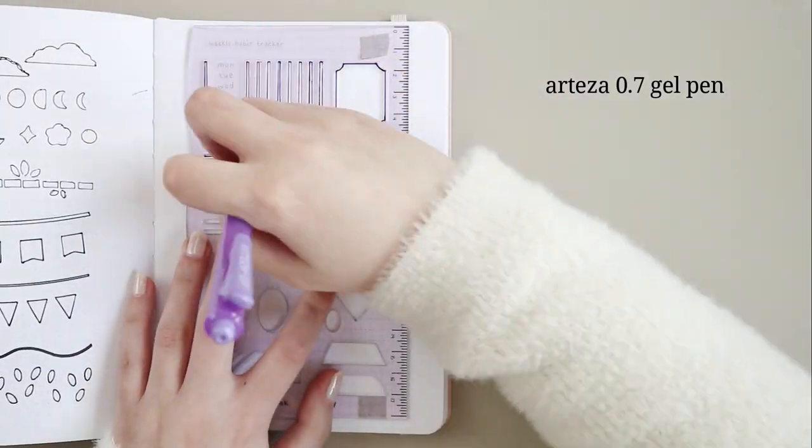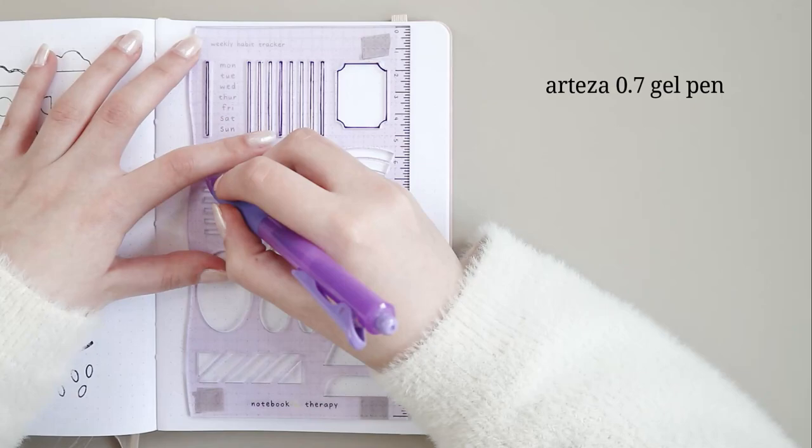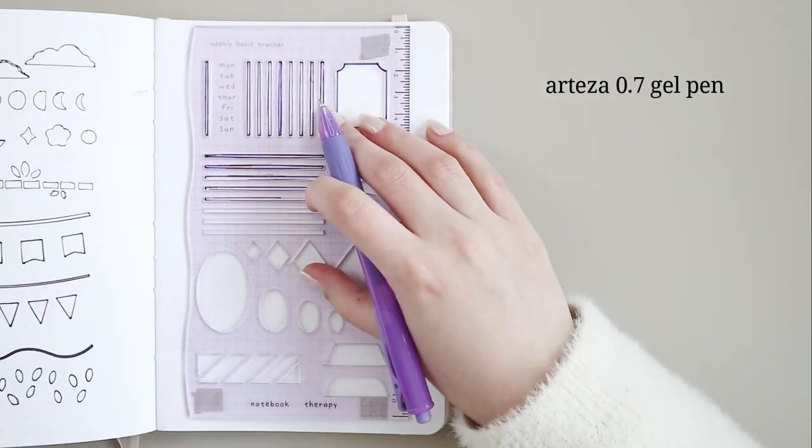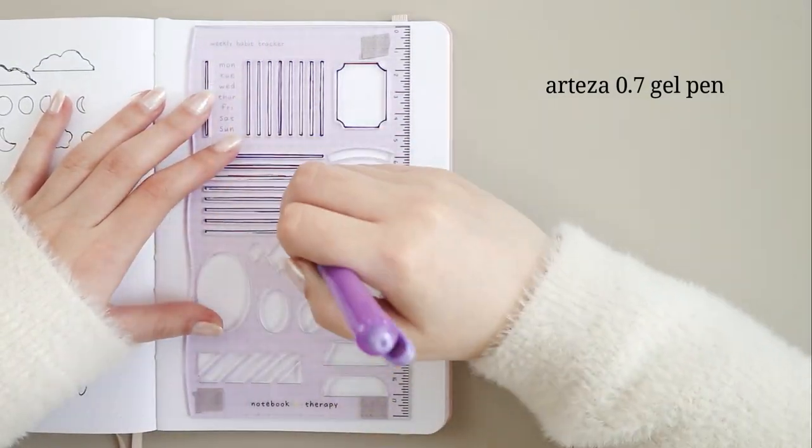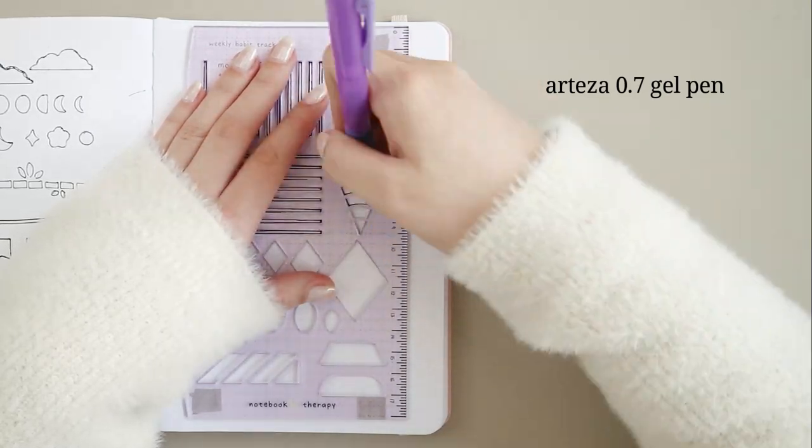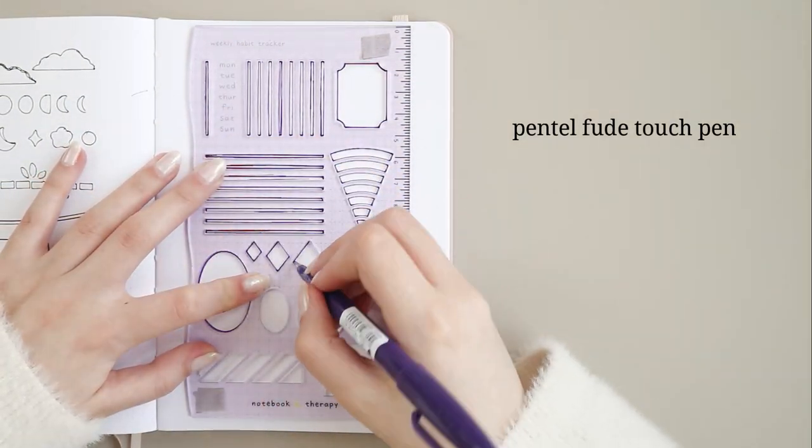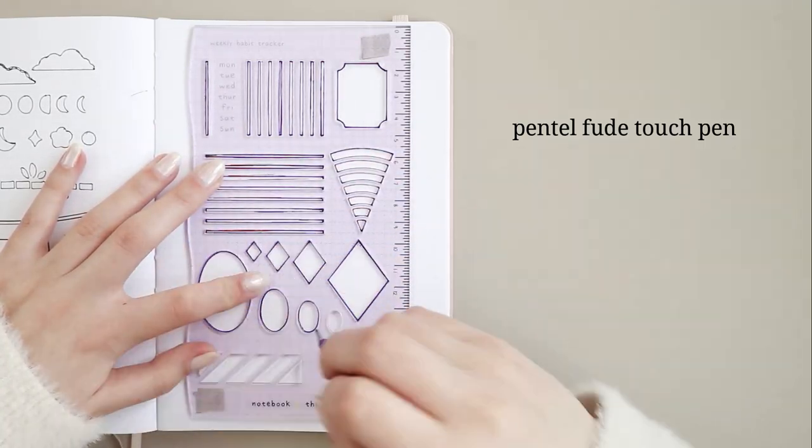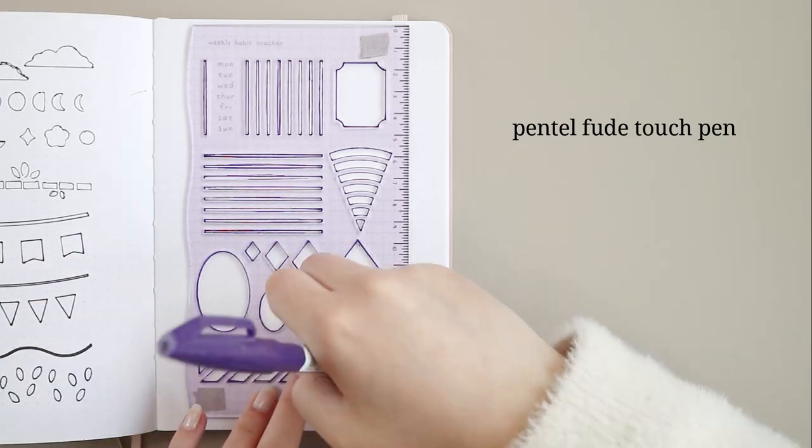You will see what I mean once I show you the overview of the designs on the paper in the end so I recommend you draw the designs with the pencil first just to have the shape there and then go over with a marker or a fineliner for a cleaner shape. By the way, have you ever tried to use stencils?